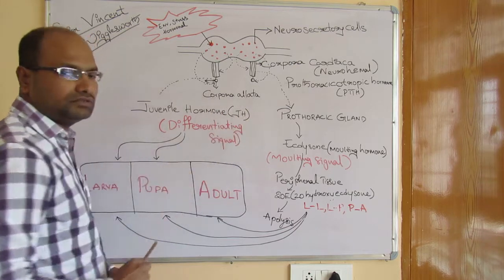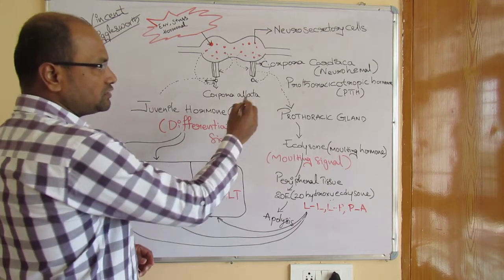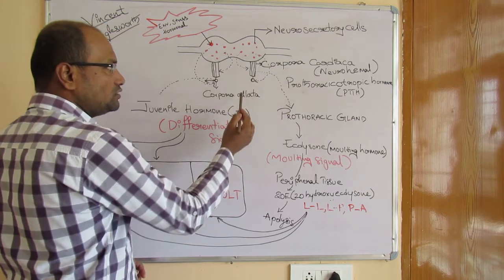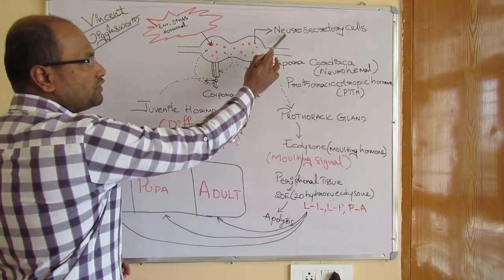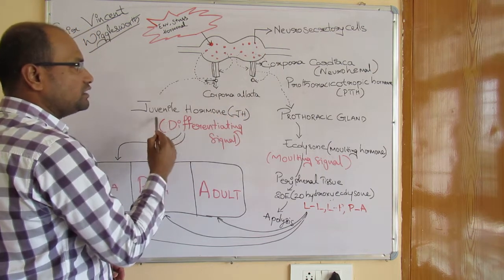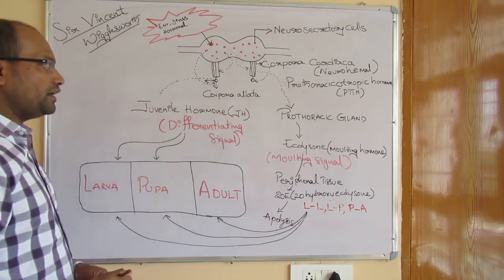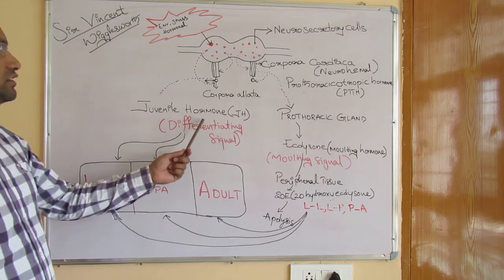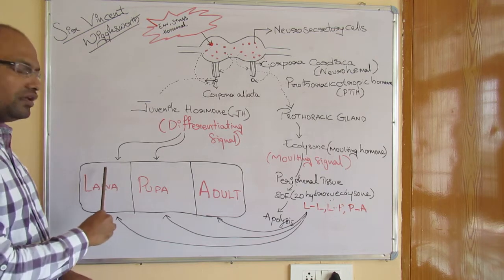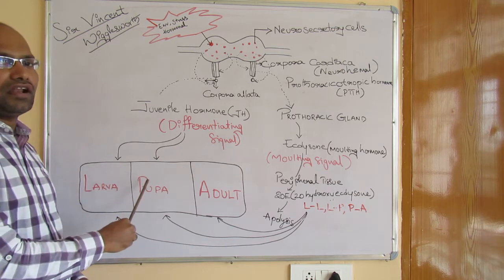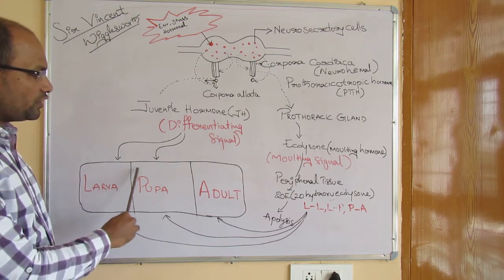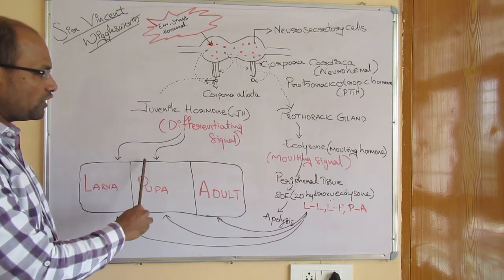There is another neurohaemal structure called the corpora allata, located just behind the corpora cardiaca in the brain region. Under the influence of neurosecretory cells, the corpora allata produces a hormone called juvenile hormone. This hormone plays an important role in the conversion of one larval form to another larval form.